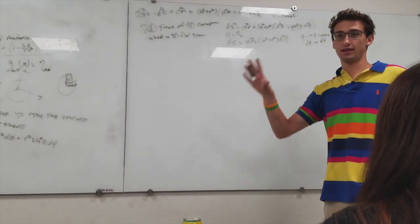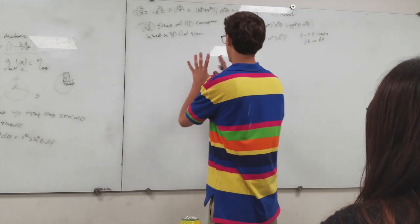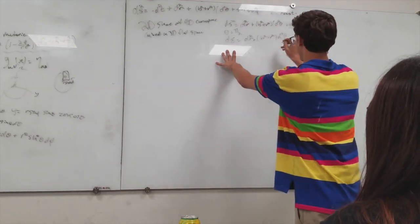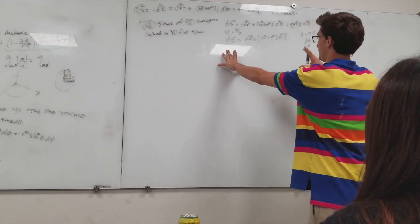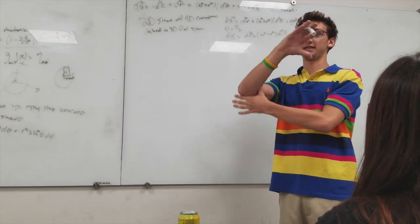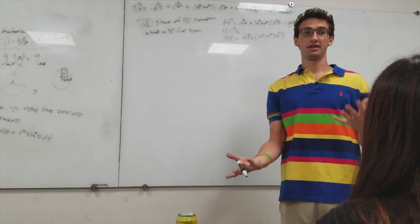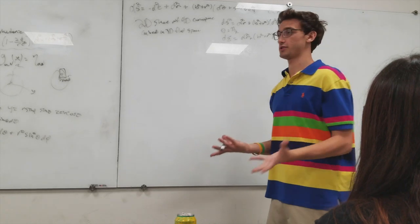So this makes embedding it in three-dimensional space easier. Because we could just say, because of this axial symmetry, we could embed it in a three-dimensional spacetime that's axially symmetric, which could be the cylindrical coordinates. So cylindrical spacetime.